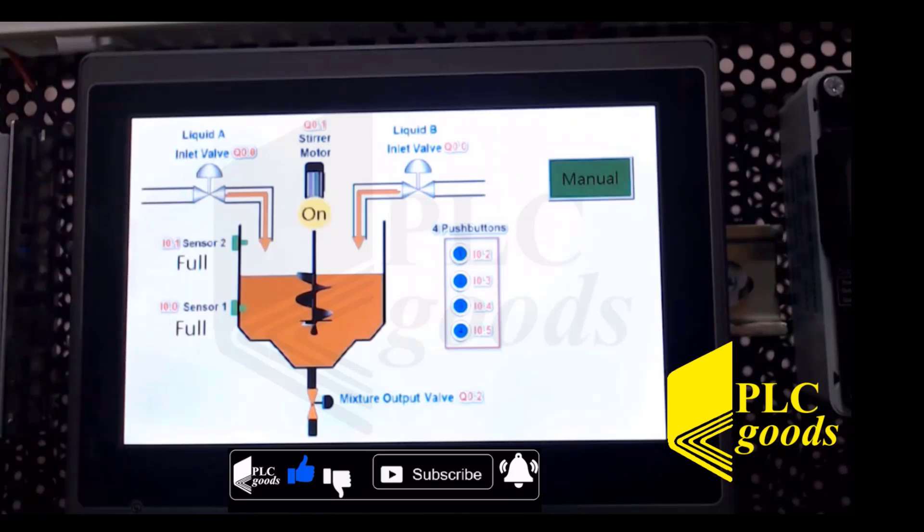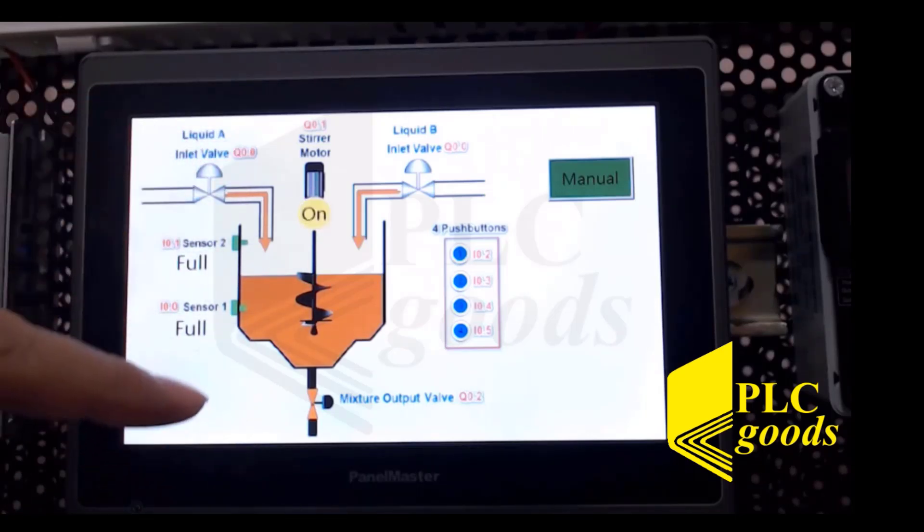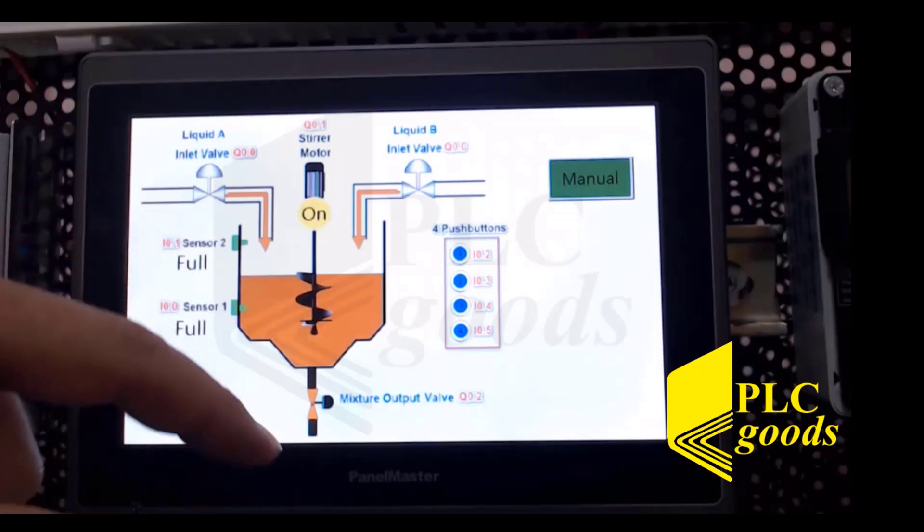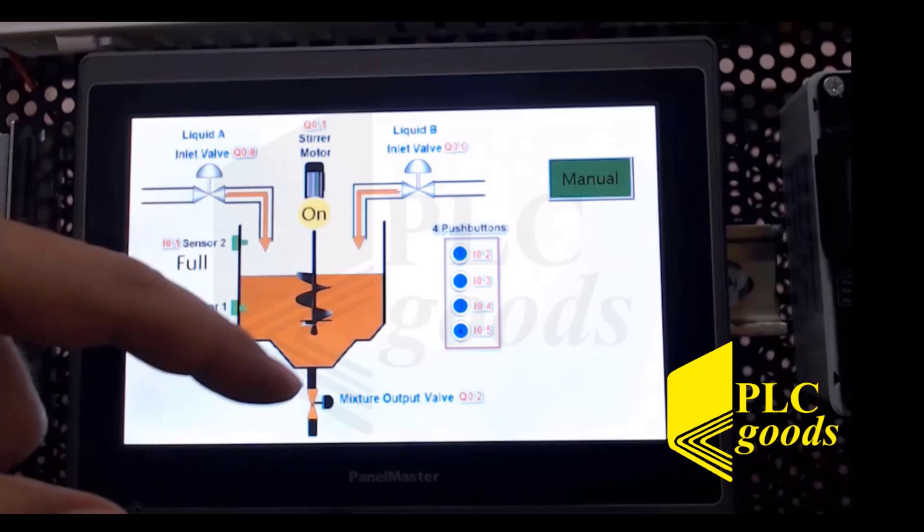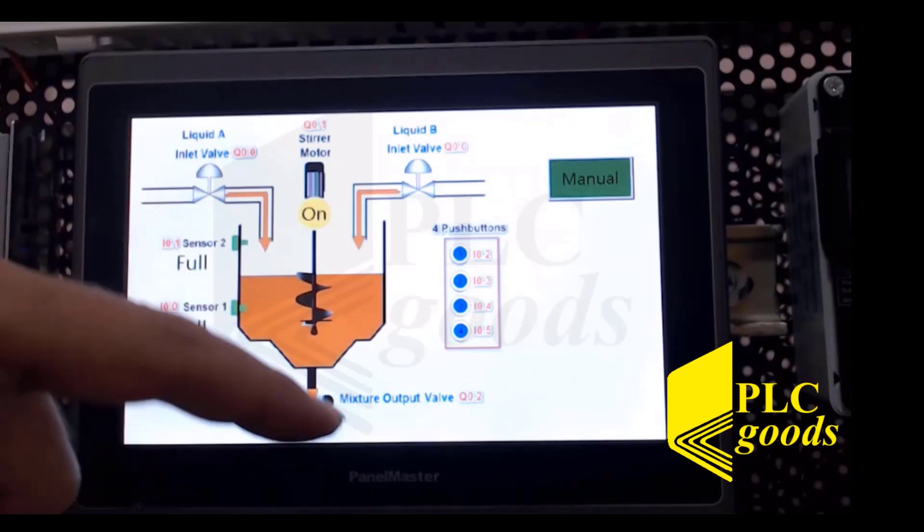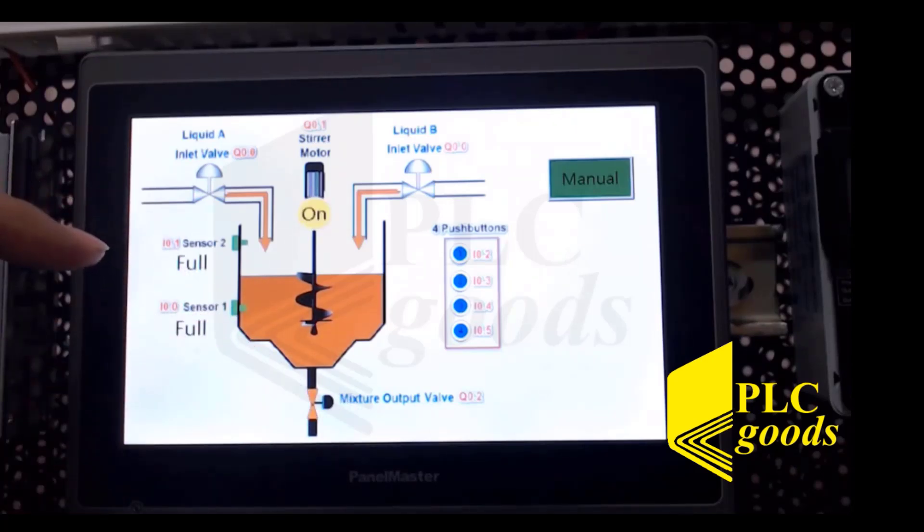It has a steering motor, it has an outlet valve that is controlled by Q0.2, two level sensors I0.1 and I0.2.